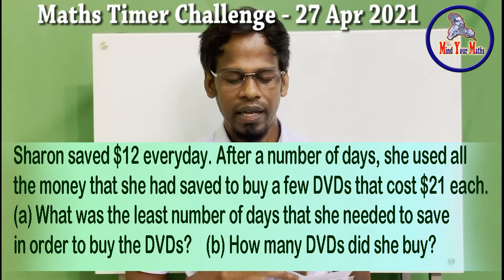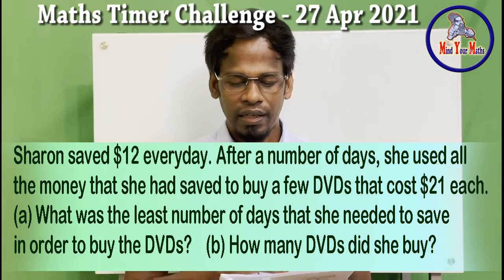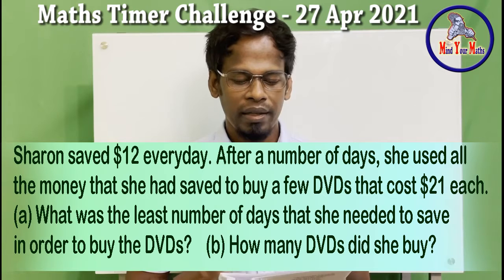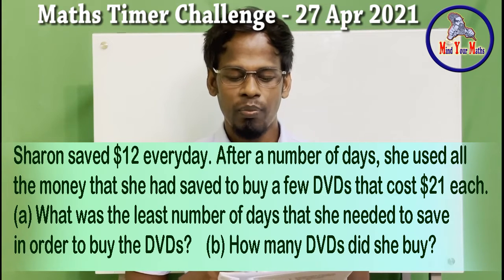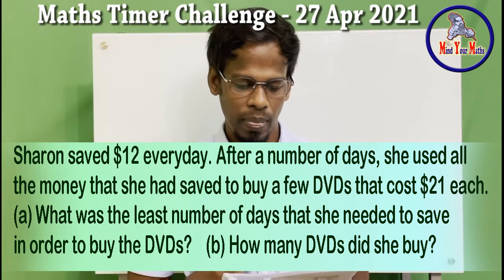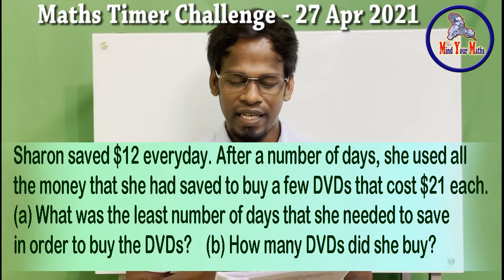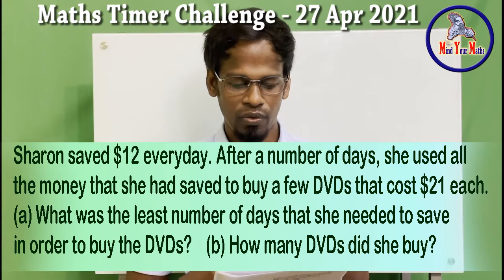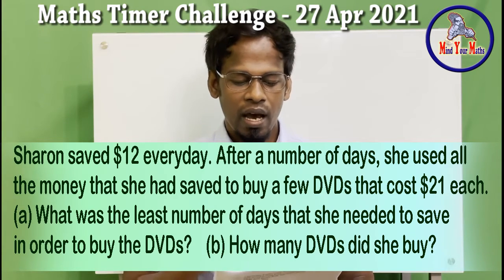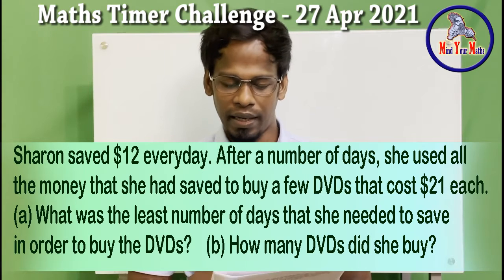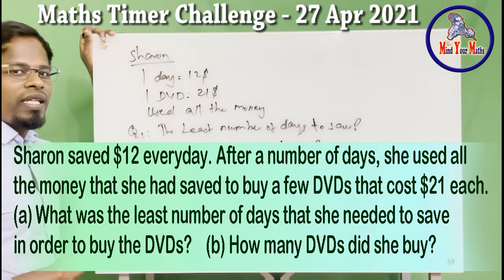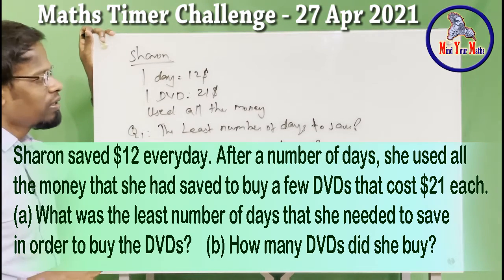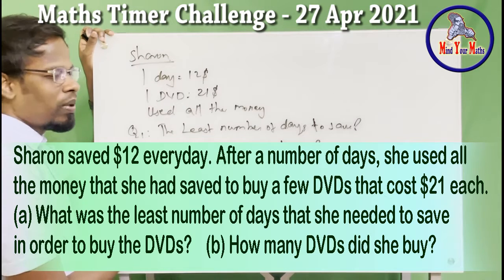Okay, here's the problem. Sharon saved $12 every day. After a number of days, she used all the money she had saved to buy a few DVDs that cost $21 each. Question one: what was the least number of days she needed to save in order to buy the DVDs? Question two: how many DVDs did she buy?